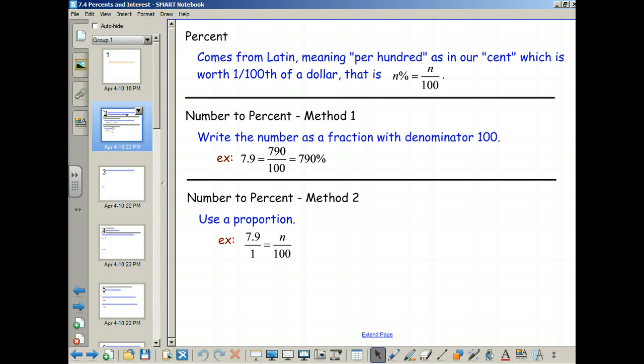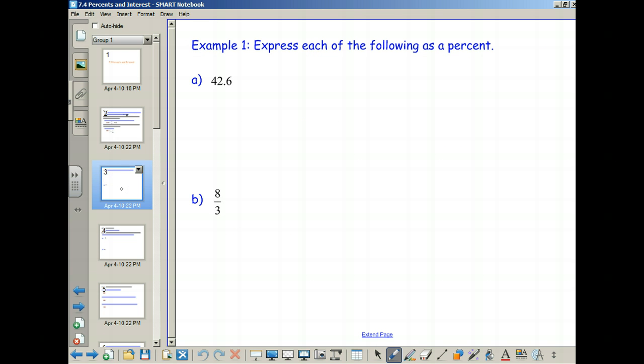Here's the first one we're going to do. We're going to take a number, in this case 42.6, and we're going to turn it into a percent. I want to show you how the proportion works, since that's probably the least common method we've seen before. One way to do this is to set this up as 42.6 over 1 equals n over 100.